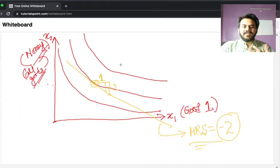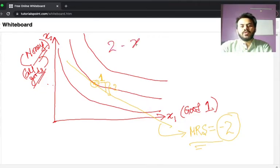Which makes a lot of sense, because when I say MRS is equal to minus two, it means that I'll have to give up two units of good two in order to gain one unit of good one.